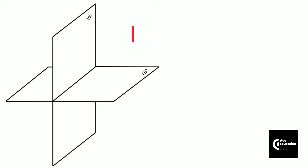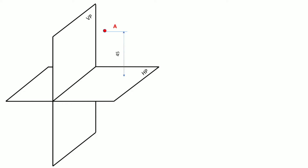Whenever any point is kept in the first quadrant, we can project that point on the vertical plane and on the horizontal plane. I have taken a random point A here, which is at a distance of 45 mm above the horizontal plane and 20 mm in front of the vertical plane. As an observer, you are always standing in front of the vertical plane and looking in this direction, so that you can project that point on the vertical plane.